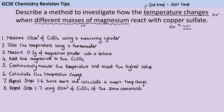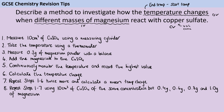Then once we've done that, we can repeat the whole thing, and we can talk about our control variables at this point. So we're going to have the same volume and the same concentration of copper sulphate solution, but now we're going to add these different masses of magnesium so we can see how that alters the temperature change.